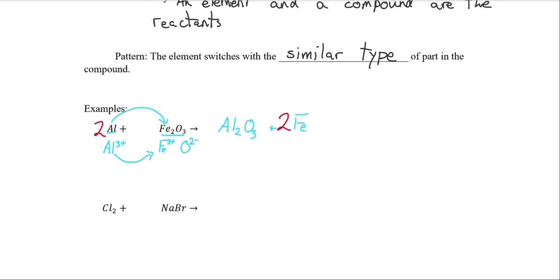What about our next example? We have chlorine gas reacting with sodium bromide. Chlorine gas is a non-metal. That means the chlorine is going to replace the non-metal, the bromine. Again, let's check our periodic table for the charges.